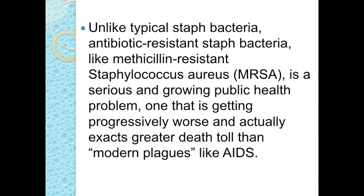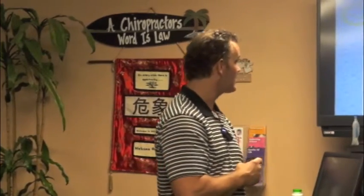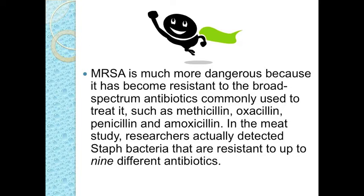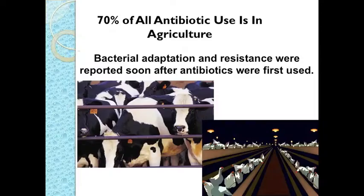Unlike typical staph bacteria, MRSA is a serious growing public health problem with a greater death toll than AIDS. It's been called a superbug — much more dangerous because it has become resistant to broad-spectrum antibiotics such as methicillin, oxacillin, penicillin, and amoxicillin. In the MEAT study, they detected staph bacteria resistant to up to nine different antibiotics. If you get MRSA, and it's the flesh-eating kind, it will literally start to eat your body tissue. Up to 84% of all antibiotics used in the world are used on livestock — not just to prevent sickness, but to make them bigger.